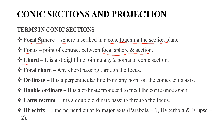A chord is a straight line joining any two points on a conic section. If the chord passes through the focus, it is called a focal chord.